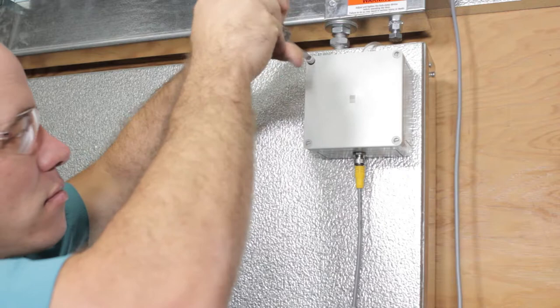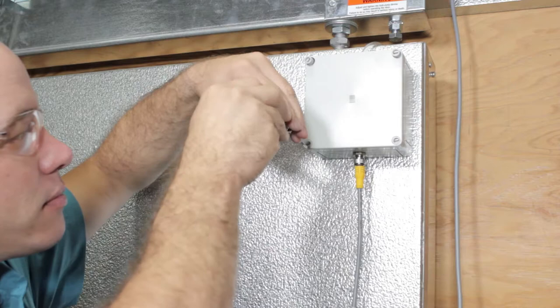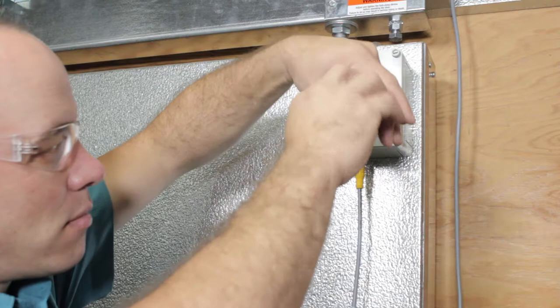Remove the door leaf junction box cover plate using the standard flathead screwdriver to loosen the locking screws. For ease of reassembly, remove only three of the locking screws and loosen the fourth locking screw so the cover plate remains attached and slides out of the way.